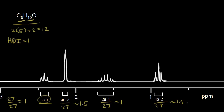Remember, these are just the relative numbers of protons, but you can't have 1.5 protons. We need whole numbers and need to account for 10 total protons. If we multiply by 2: 1×2=2, 1.5×2=3, 1×2=2, and 1.5×2=3. Adding them up: 2+3+2+3=10 protons. We've now accounted for all 10 protons using our integration values.